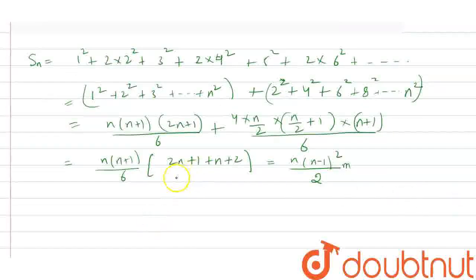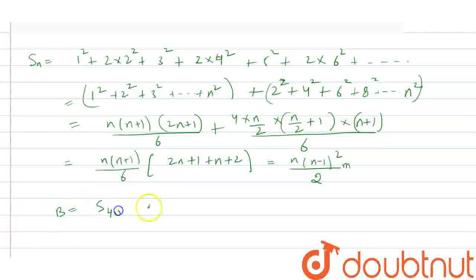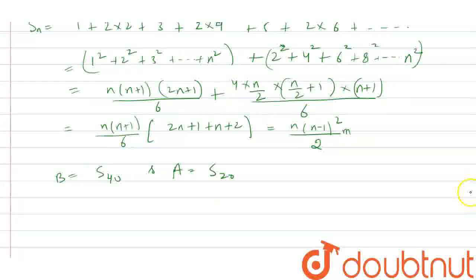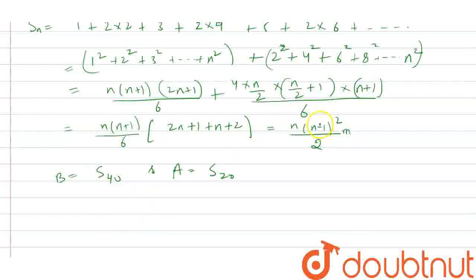Given that B is equal to the sum of 40 terms and A is equal to the sum of 20 terms, we will put down the values. That is 40 times 41 whole squared — putting in n equals 40 — so 40 times 41 whole squared.